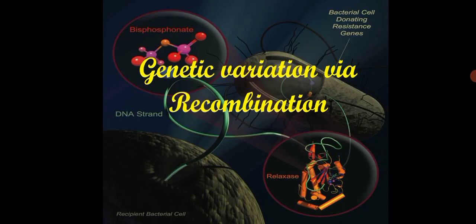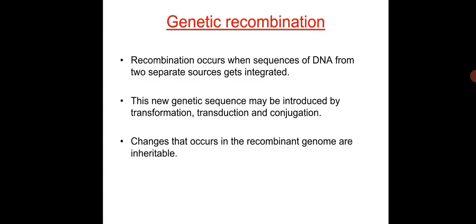The next cause of genetic variation is recombination. Genetic recombination occurs when sequences of DNA from two separate sources become integrated. This new genetic sequence may be introduced by transformation, transduction, or conjugation, and the changes that occur in the recombinant genome are inheritable.